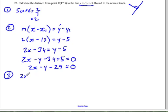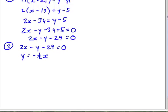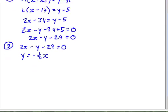Which is 2x minus y minus 29 equals 0, and y equals negative 1 half x minus 3.